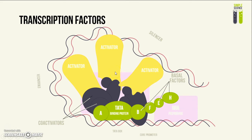Conversely, there are silencer regions, which occur in between the enhancer regions. These regions, through a similar sequence of interactions, help to suppress the amount of transcription occurring at specific points in time.